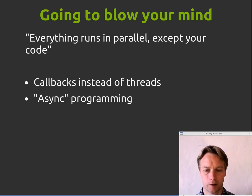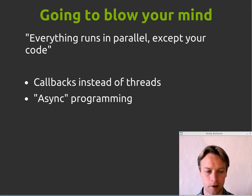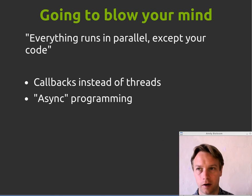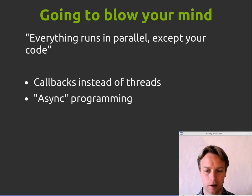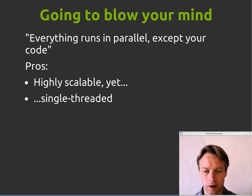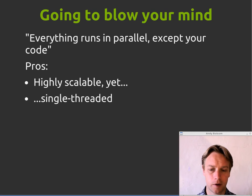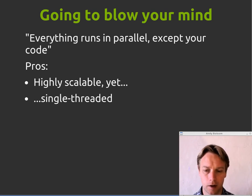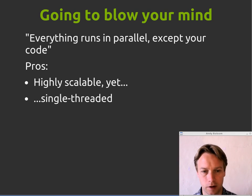Instead of handling lots of requests using threads where each thread has its own request, what Node does is asynchronous programming based on callbacks. Every time you do something, instead of just saying do it and waiting for it, you say when you've finished doing it, call this callback. What that means is that the Node server is free to run a whole load of other people's JavaScript while it's waiting for your code to wait for something slow — for example, reading something from the disk. It can run lots and lots of simultaneous requests, and yet the code you're writing is completely single-threaded. You don't have to worry about threads because there are no threads as far as you're concerned. You just provide callbacks, and a load of stuff is happening in parallel without you having to worry about it.